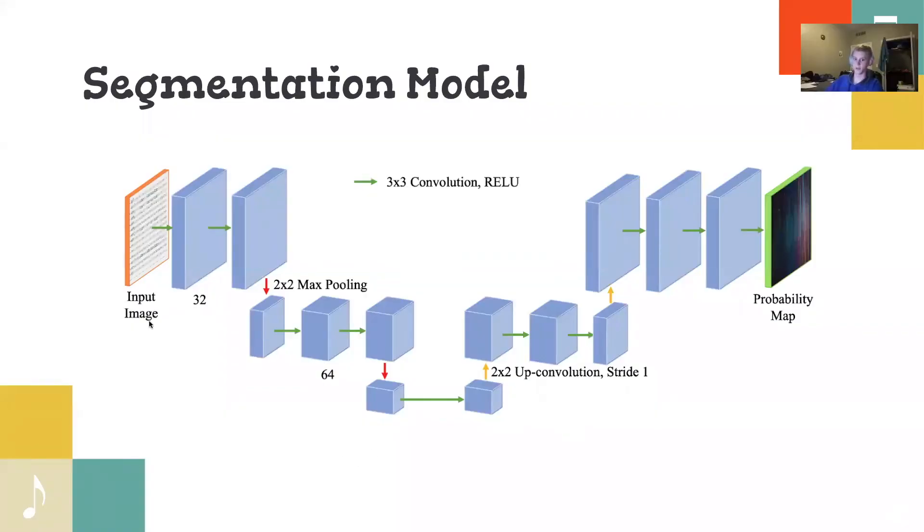So what's pictured is a roughly two-scale representation of our UNET segmentation model. The direction of computation is obviously left to right, and it takes, as you can see, an RGB image as input and produces a probability map for 13 different classes as output.